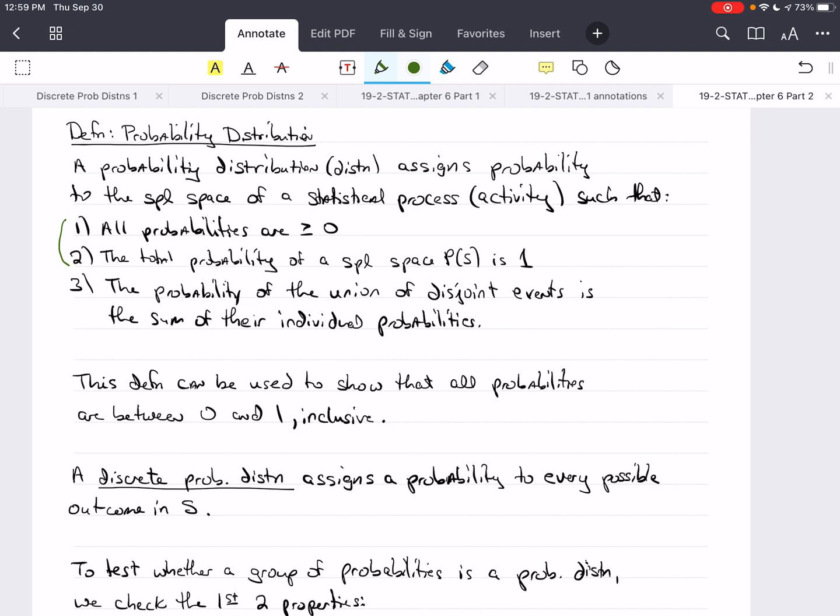And we've already learned this with the addition rule. So, this definition can be used to show that all probabilities are between 0 and 1 inclusive. Now, I've already told you this, but it could actually be proved, and we're not going to do that because this is an introductory class.